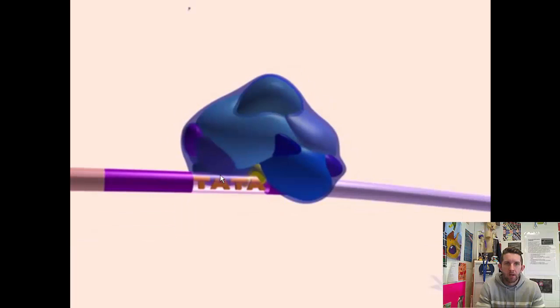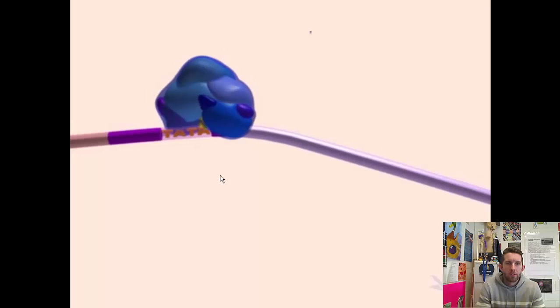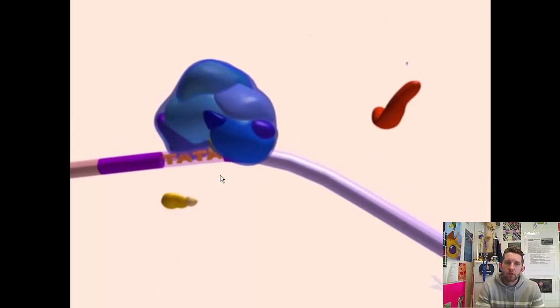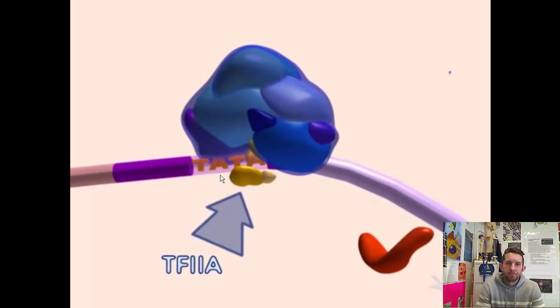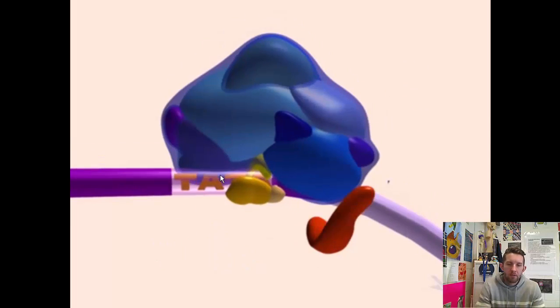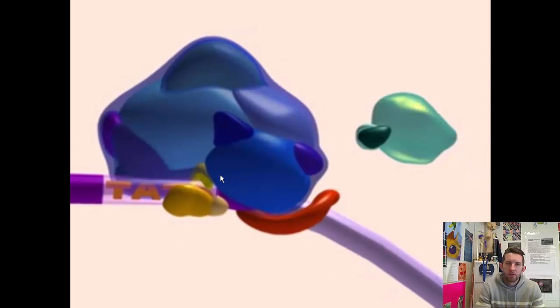Lands there. And like we said, it sends out kind of a beacon that says, RNA polymerase, here's where we need to go. In come a couple more transcription factors, TF2A and TF2B. They start at the beginning of this transcription complex. There's our RNA polymerase landing on our transcription unit.